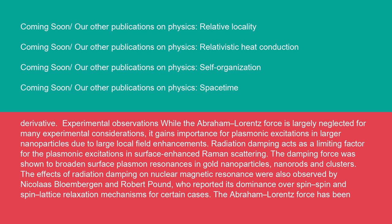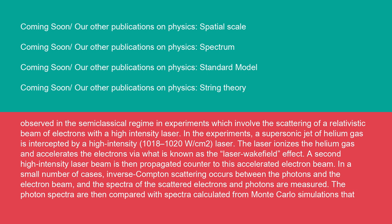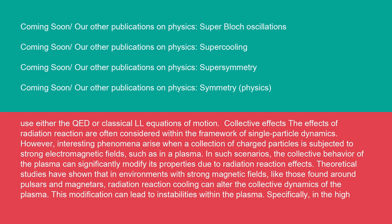The Abraham-Lorentz force has been observed in the semi-classical regime in experiments which involve the scattering of a relativistic beam of electrons with a high-intensity laser. In the experiments, a supersonic jet of helium gas is intercepted by a high-intensity (10¹⁸ to 10²⁰ W/cm²) laser. The laser ionizes the helium gas and accelerates the electrons via what is known as the laser wakefield effect. A second high-intensity laser beam is then propagated counter to this accelerated electron beam. In a small number of cases, inverse Compton scattering occurs between the photons and the electron beam, and the spectra of the scattered electrons and photons are measured. The photon spectra are then compared with spectra calculated from Monte Carlo simulations that use either the QED or classical LL equations of motion.